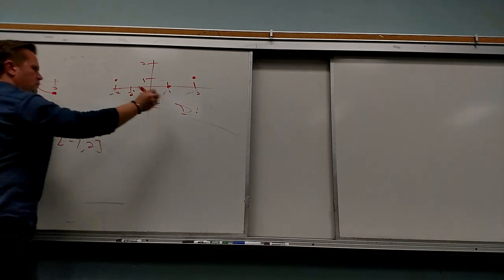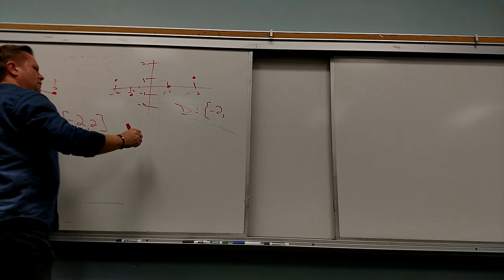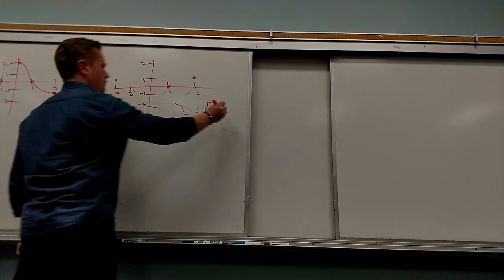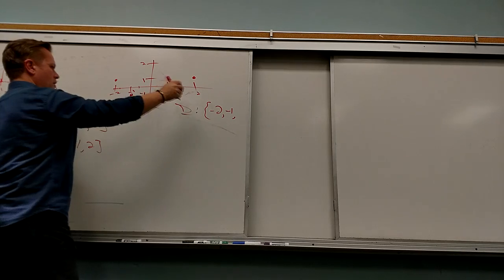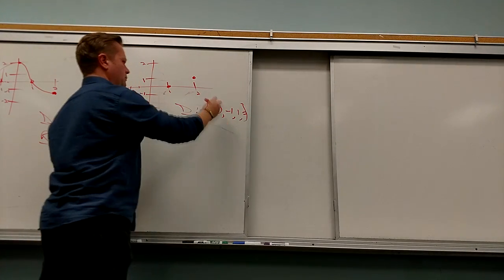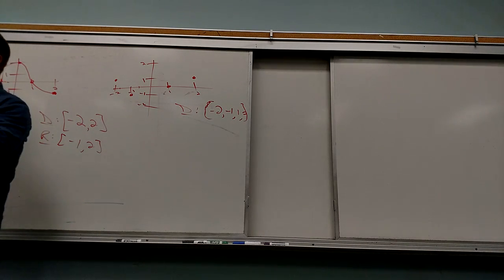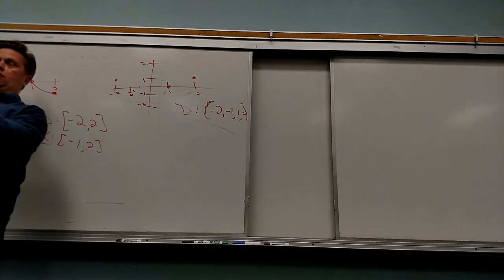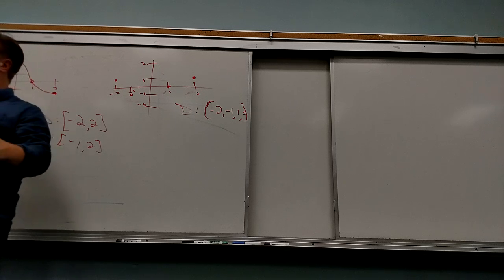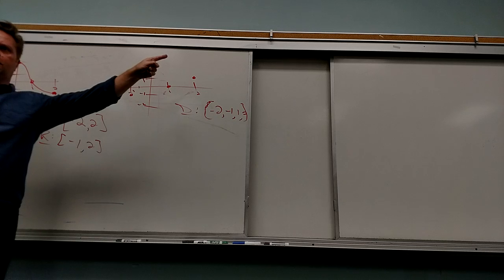Why did I include all of these in my answer for the first graph? Because every single one of them has an output — the dots are connected. Here, what are the only X-values that have a dot, that have an output? Negative 2, negative 1, 1, 2. So I have to list them and put them in these brackets — they're a set of values that actually have outputs. I can't just say everything from here to here — they're not connected.